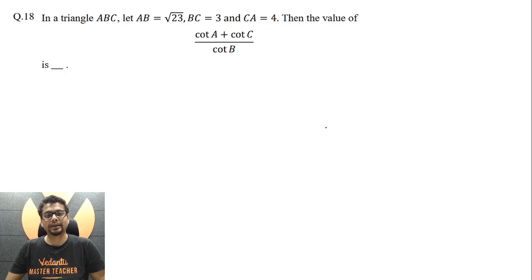In a triangle ABC, AB has length √23, BC has length 3, CA has length 4 units, then the value of (cot A + cot C) / cot B is.